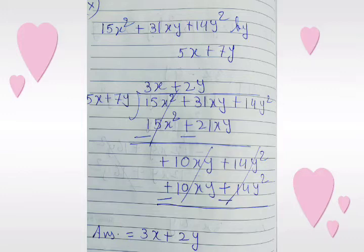We multiply 5x plus 7y with plus 2y and get plus 10xy plus 14y squared. After changing the sign of the last line, we can cancel both terms and the answer is 3x plus 2y.